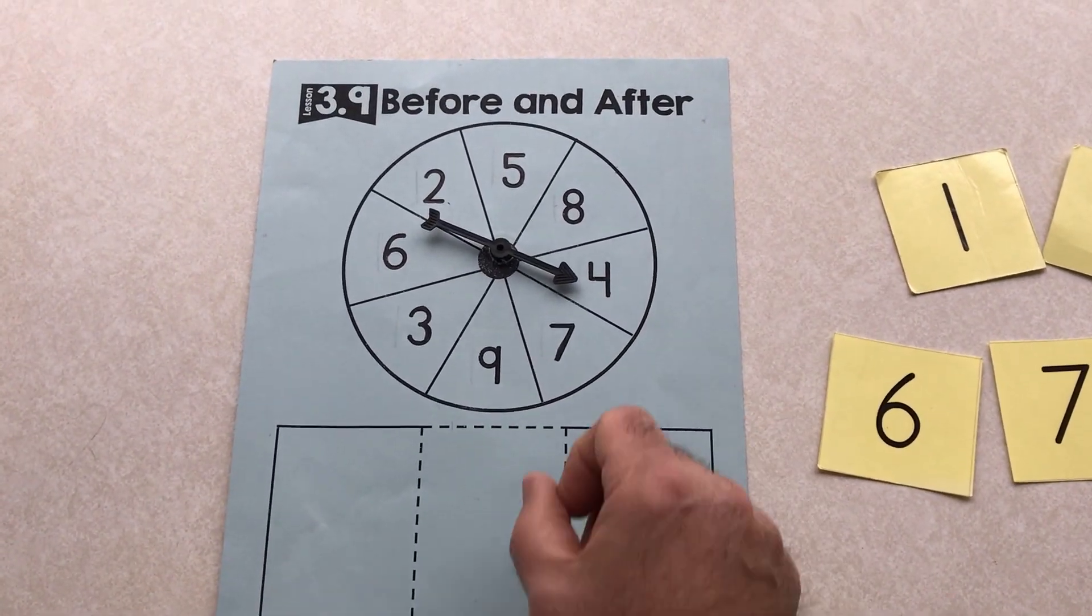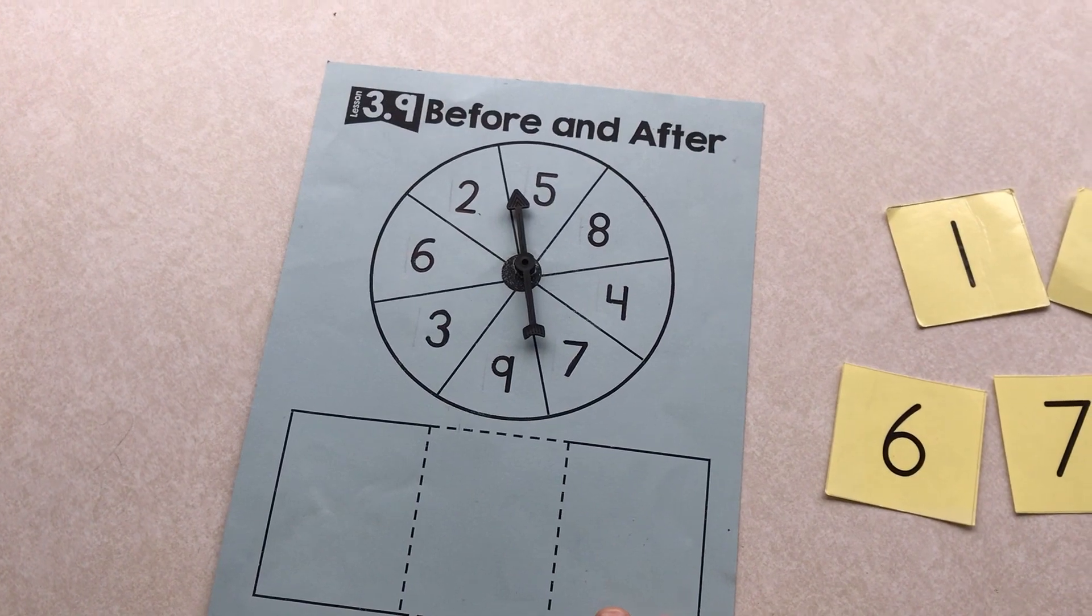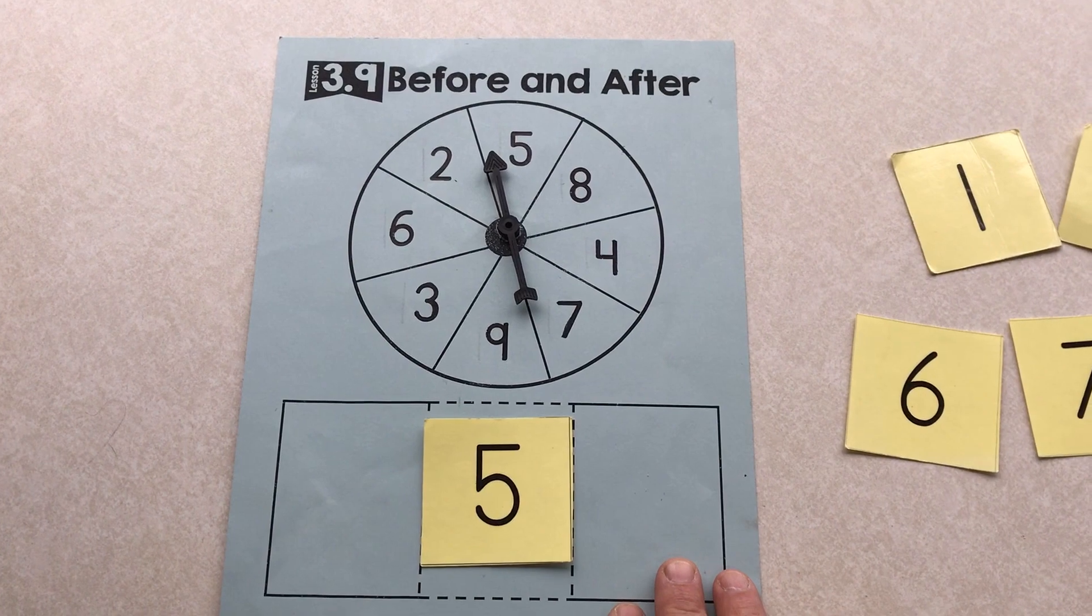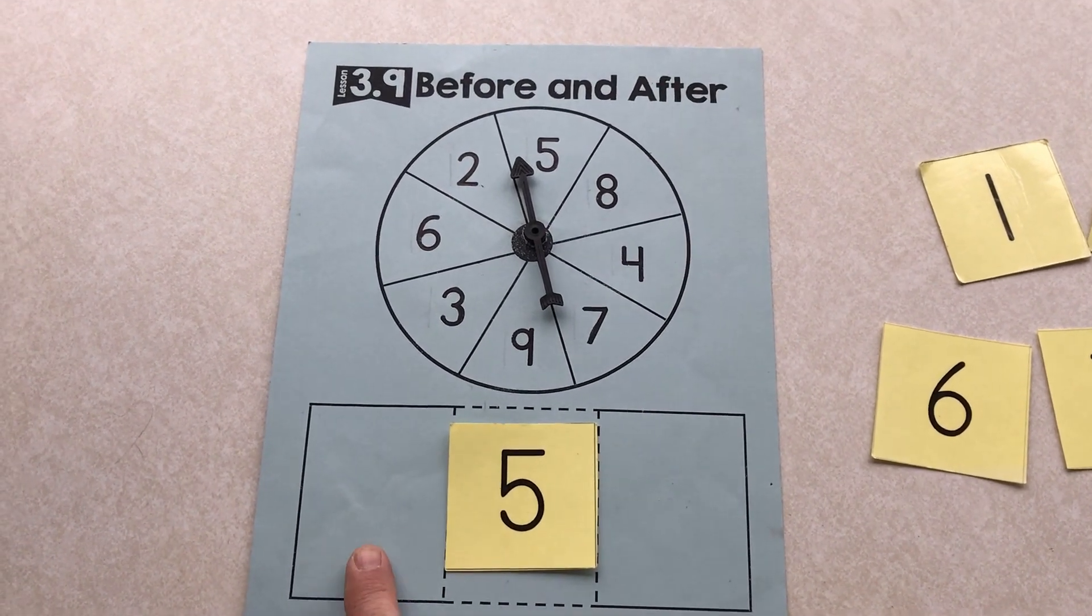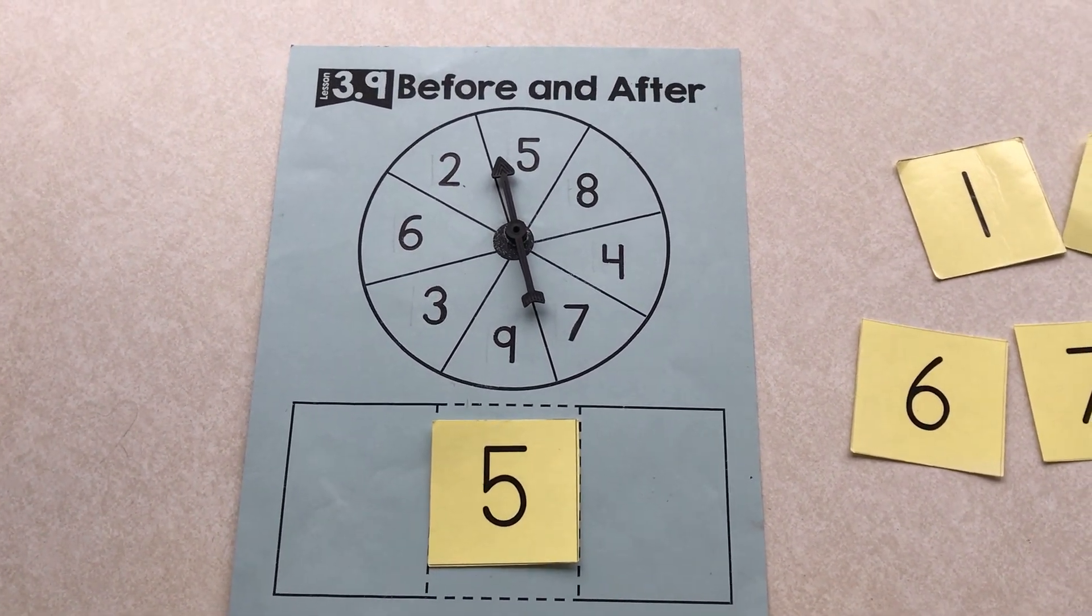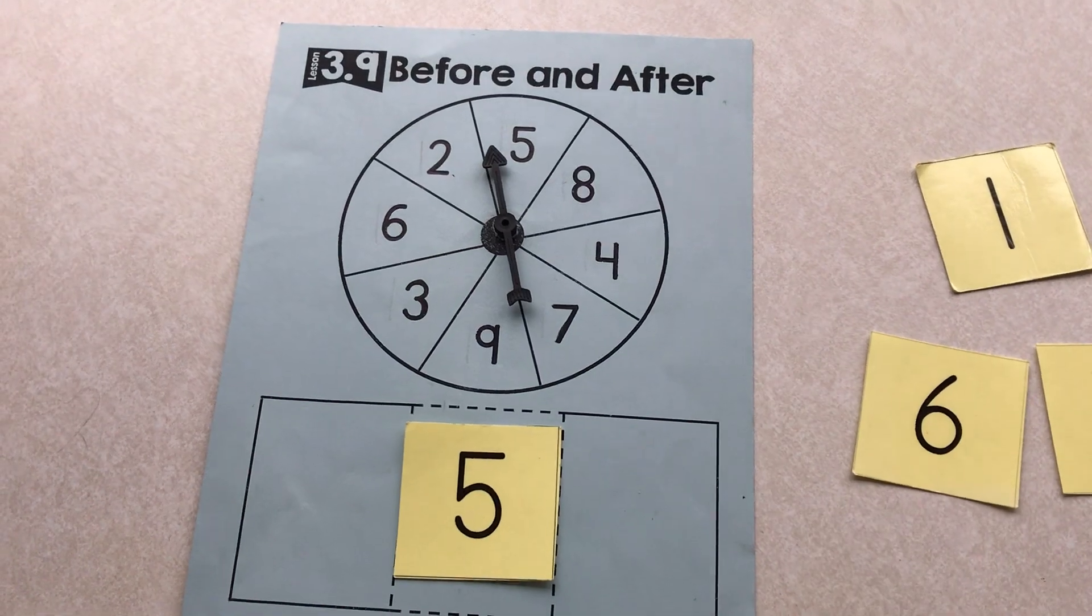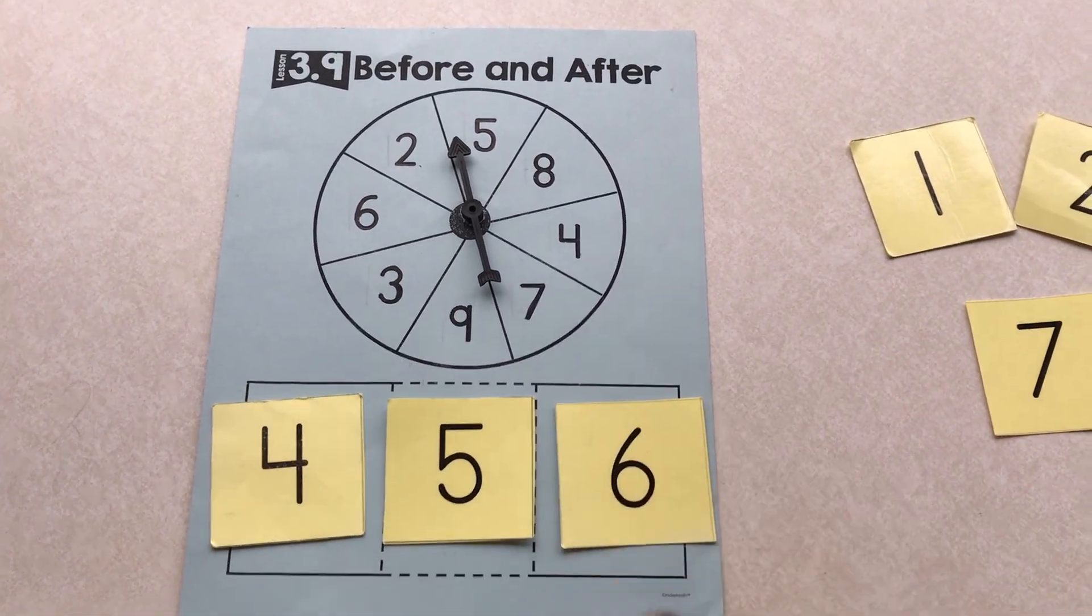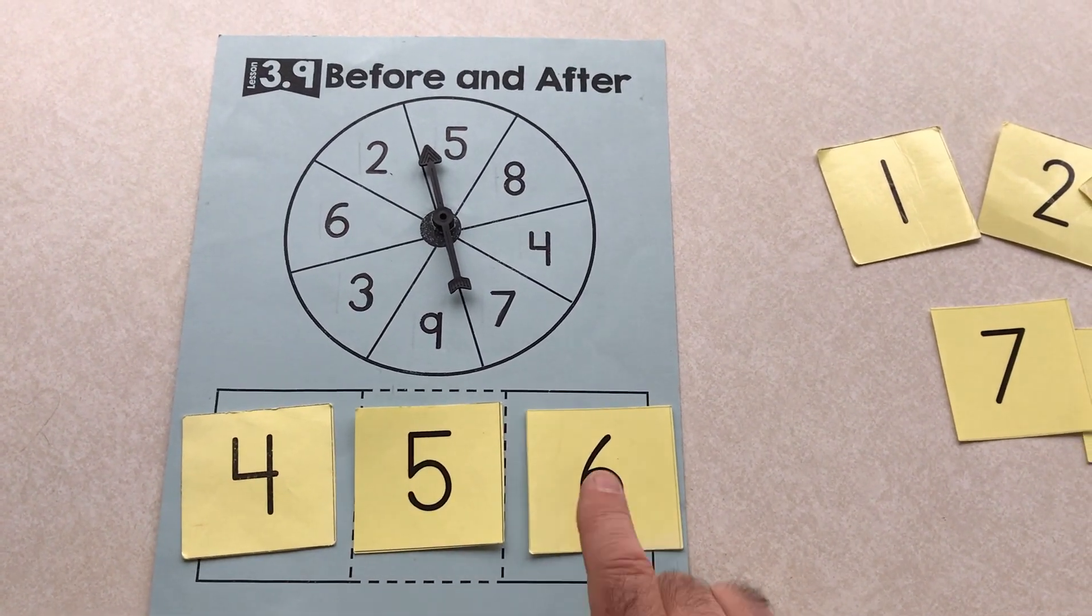We just did that one. Five is the number. What comes before and after five. Four, five, six.